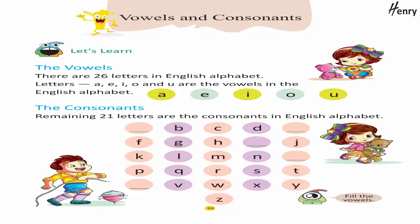Letters A, E, I, O and U are the vowels in the English alphabet: A, E, I, O, U.